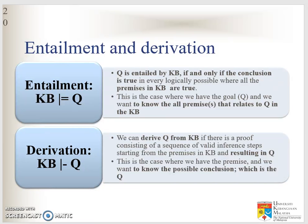What is entailment and derivation in propositional logic? It's the other way around of saying about proof and theorem. Entailment: Q is entailed by the knowledge base if and only if the conclusion is true. This is the case where we have the goal, or Q, and we want to know all premises that relate to Q in the knowledge base. Sometimes you have to trigger up to 10 rules before you can get to the goal. So you want to entail all the proof, all the premises that relate to Q.